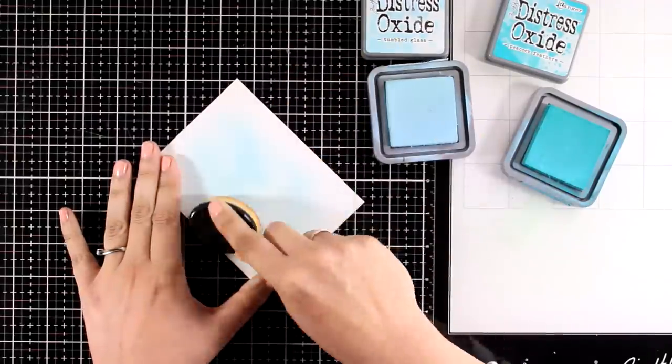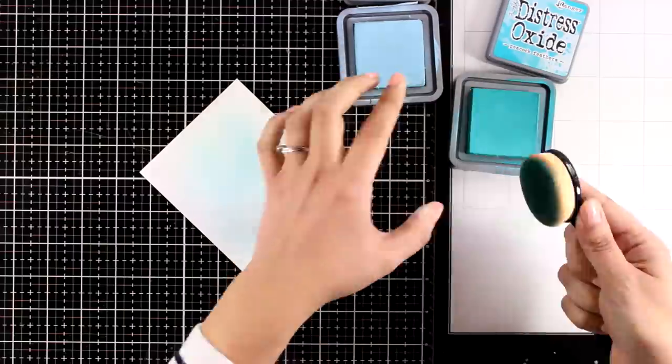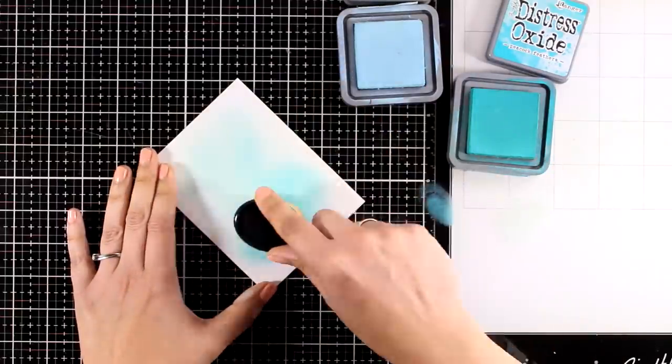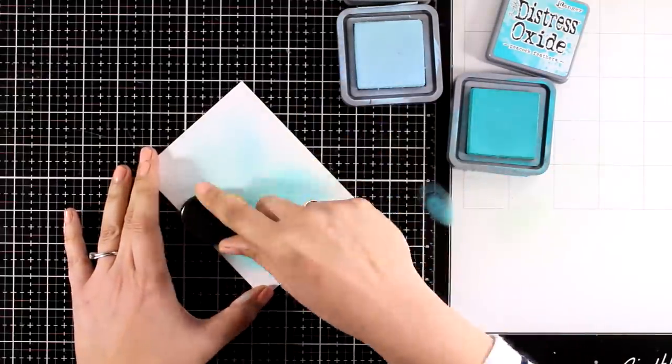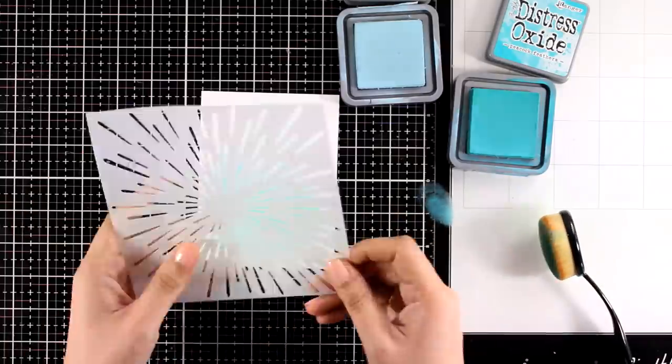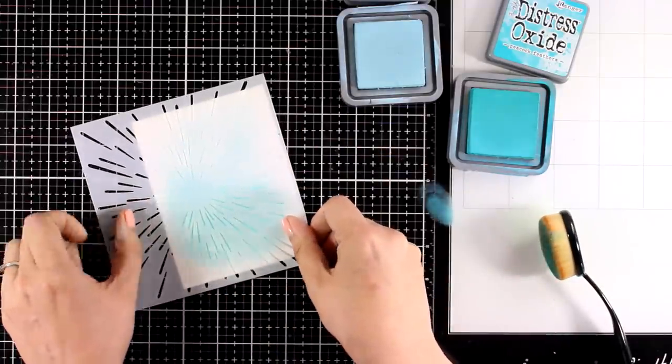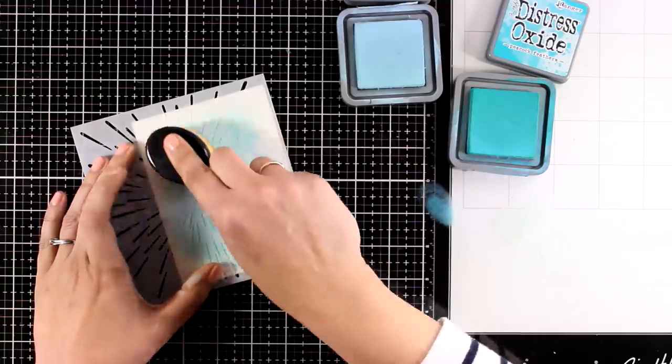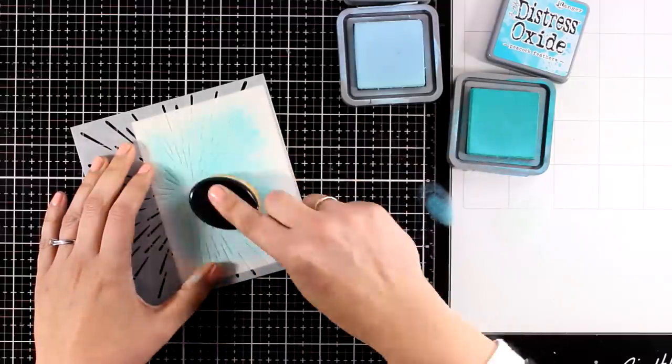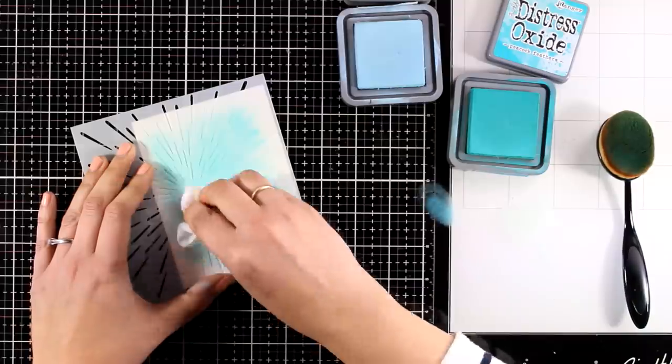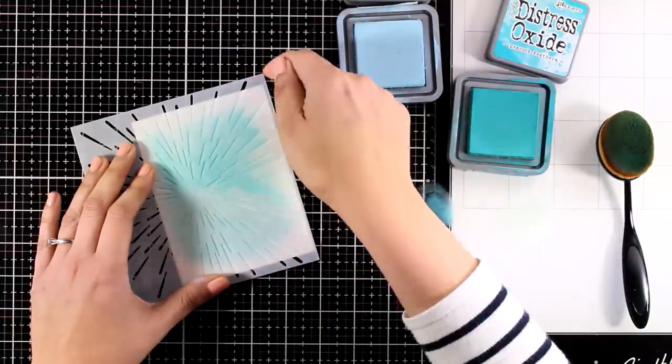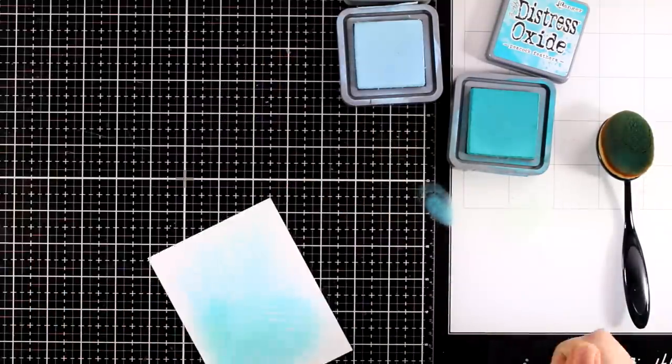This time I am working with my blues, these are peacock feathers and tumbled glass. I am not being very neat, I just want to have a basic color at the bottom and then I am going to apply the stencil on top, go with a darker shade of blue towards the top and with the baby wipe I am going to lift color from the bottom and here is the finished look.